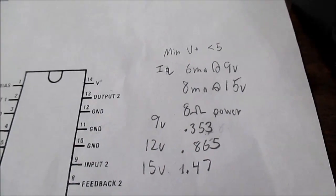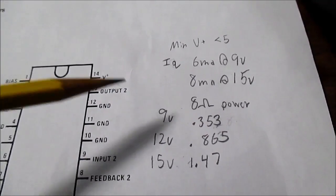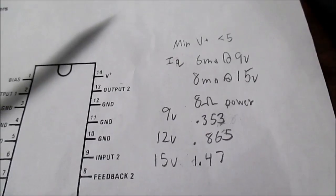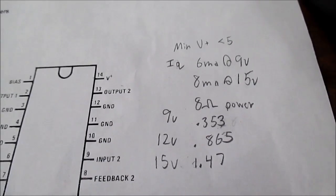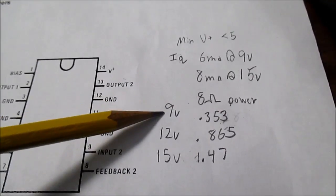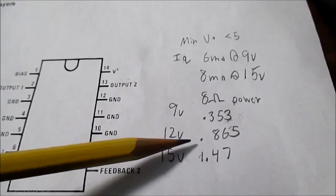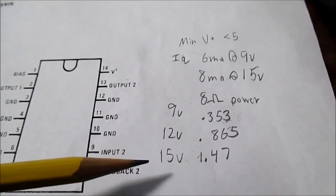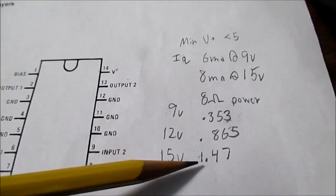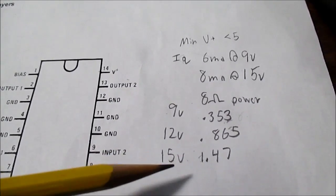I have some more power measurements. If I didn't mention before, it's both channels driven with 8 ohm loads. Maximum clean power before clipping. It's a nice clean signal, no distortion. Again, at 9 volts it was 0.353 watts. 12 volts it went up to 0.865. And 15 volts, 1.47. About a watt and a half of clean power at 15 volts.